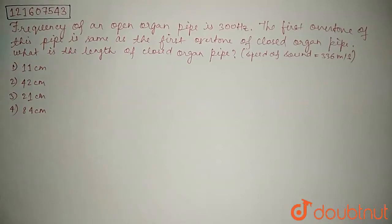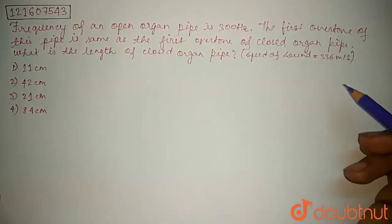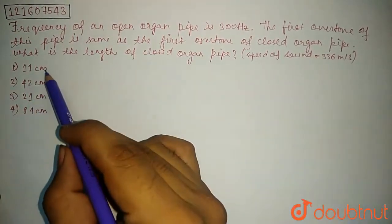Hello students, the question is: Frequency of an open organ pipe is 300 Hz. The first overtone of this pipe is same as the first overtone of closed organ pipe. What is the length of closed organ pipe if speed of sound is 336 meter per second? There are 4 options.